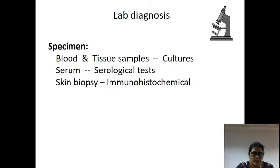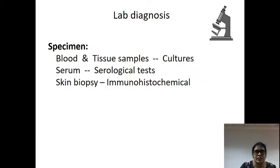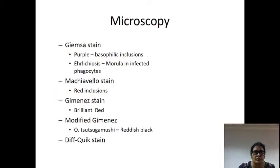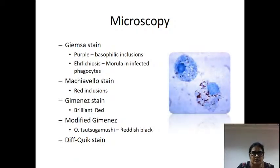The clinical manifestation of scrub typhus includes the same typhus features. All Rickettsial agents cause fever with rash. A typical eschar is present. The triad of scrub typhus is: eschar, lymphadenopathy, and rash. Interstitial pneumonitis, lymphadenopathy, splenomegaly, encephalitis, and respiratory failure are all present because of vascular endothelium damage. A typical eschar is present on the body.